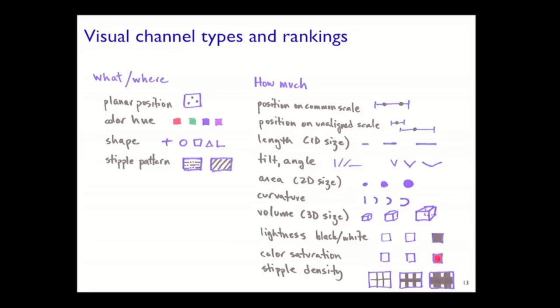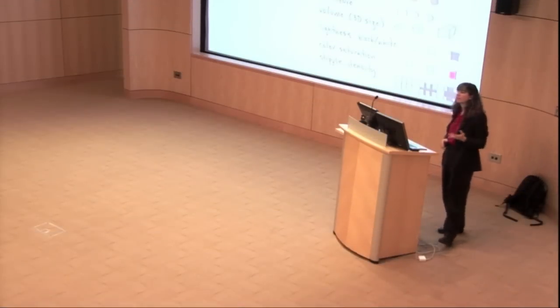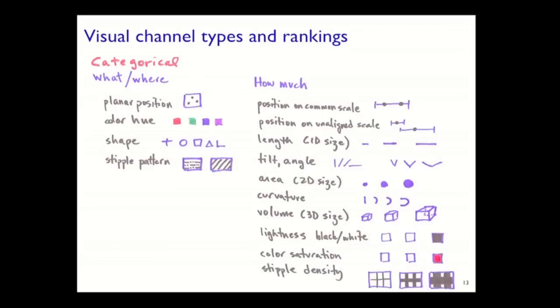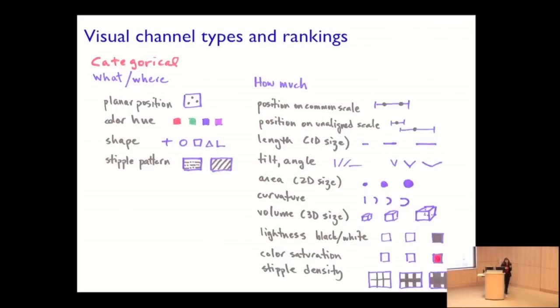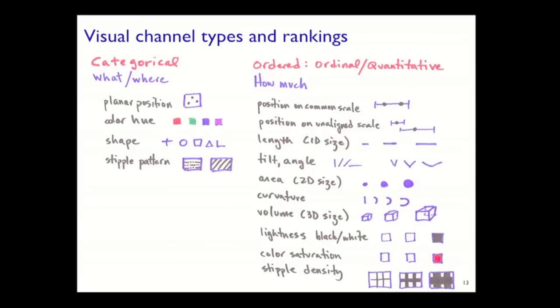Now, this should make you think of something. We just saw a data taxonomy where we had categorical data that's very well suited for these what channels. And in contrast, if you have ordered data, whether it's ordinary or quantitative, and you need to express that ordering intrinsically with the perceptual system, you would like that to be one of these how much ordered channels. Otherwise, if you start flipping in between, you'll start either to express something that's not in the data or there's something in the data that you don't even have the ability to express. You want to be really careful not to imply ordering that doesn't exist and to be able to show it where it does.